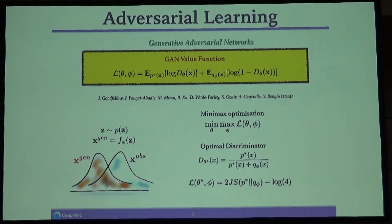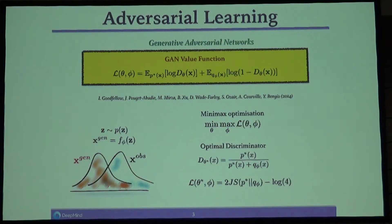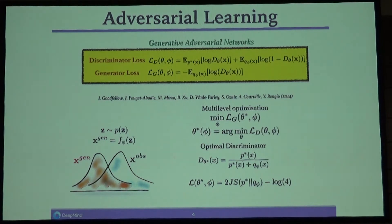In the theoretical formulation of the GAN problem, the generator is trying to maximize the loss, but only the expectation over Q actually depends on the generator — the other term isn't a function of the generator. Whereas in the practical version, instead of minimizing log(1 minus D), you try to maximize log D. The expectation is taken over the generator instead of over the true data.